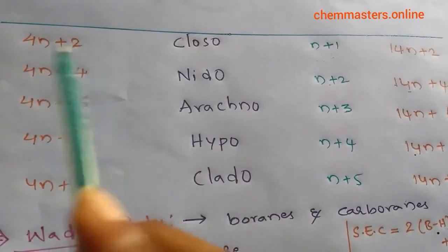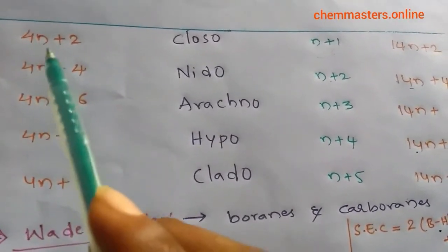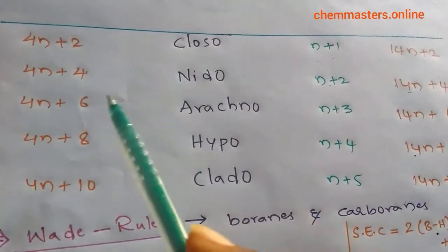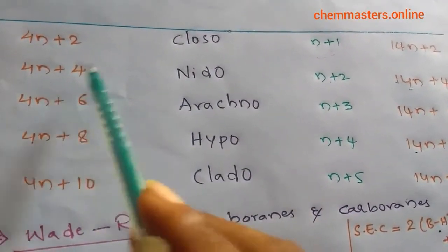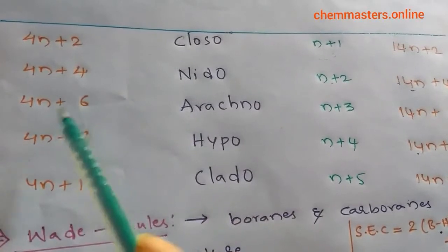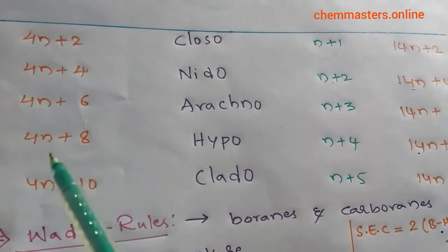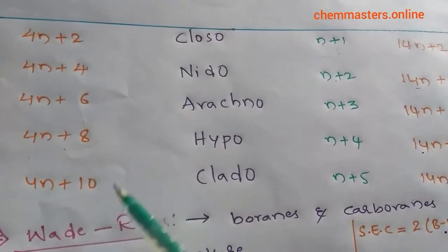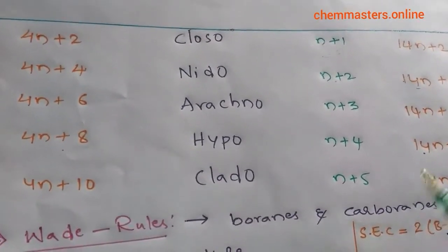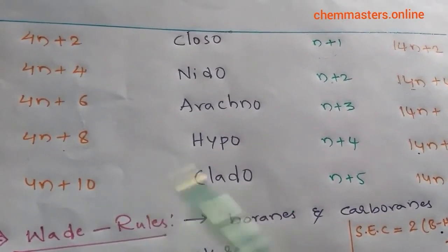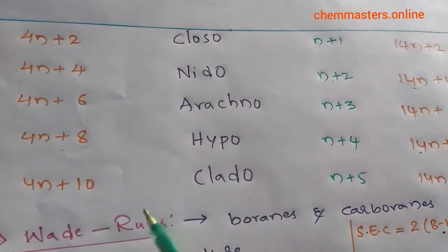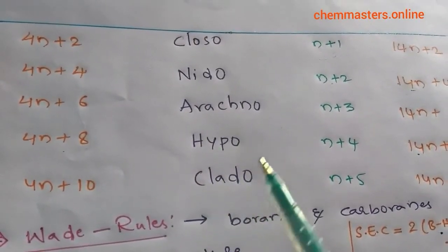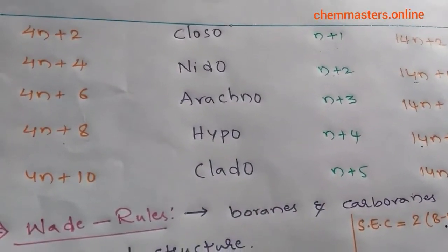We have another approach using the Wade's series: Wade's n+2 indicates closo, Wade's n+4 indicates nido, Wade's n+6 indicates arachno, Wade's n+8 indicates hypo, and Wade's n+10 indicates clado. These different approaches apply to transition elements and main group elements to determine borane clusters.